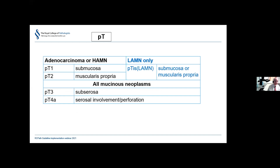Turning now to staging. Adenocarcinomas and HAMNs are staged like colorectal carcinoma: pT1 involves submucosa, pT2 muscularis propria, pT3 subserosa, and pT4A involves serosa or frank perforation. LAMNs are classified differently — we do not use pT1 and pT2. Instead, if confined to the submucosa and muscularis propria, the term pTis is used.